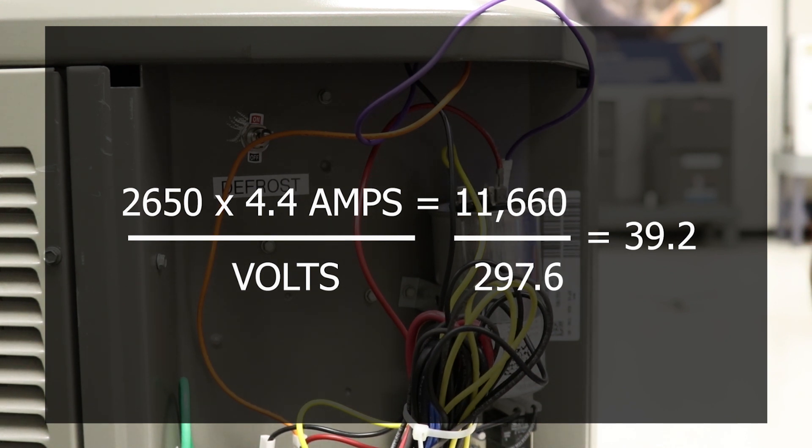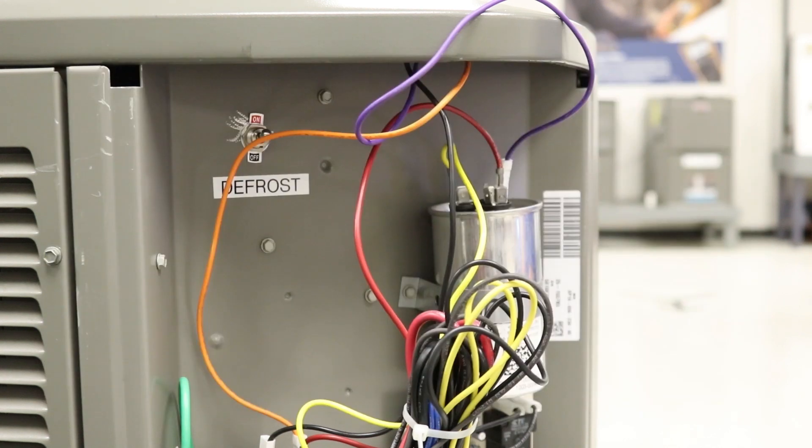Again, this capacitor is a 40 microfarad for the compressor side. So while it's actively running, it's running at 39.2 microfarads. That's the process to check the capacitor itself while it's under load.